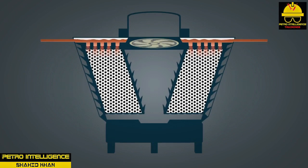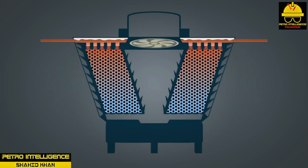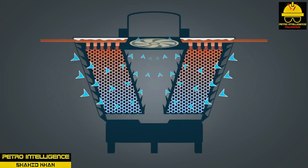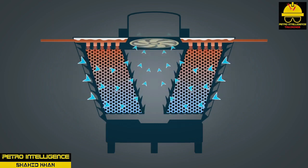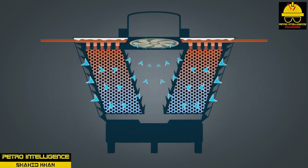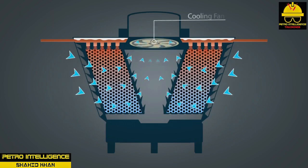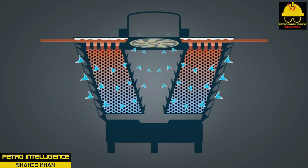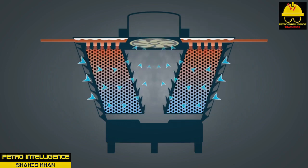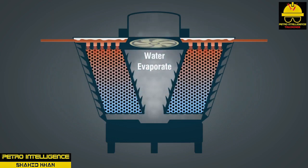Cooling tower capacity is defined as the amount of water a cooling tower can cool. There are two ways to measure temperature: dry bulb temperature (DBT) and wet bulb temperature (WBT). Wet bulb temperature takes into account the relative humidity whereas dry bulb temperature does not. Wet bulb temperatures usually are lower than dry bulb temperatures.